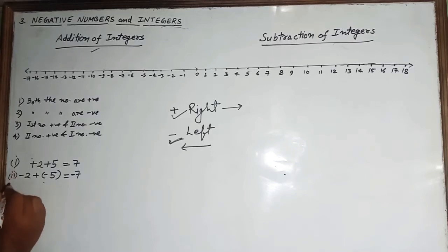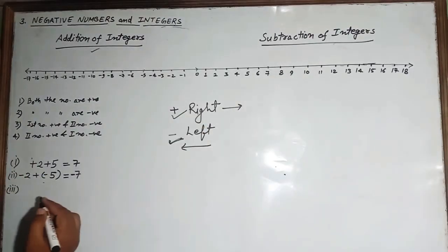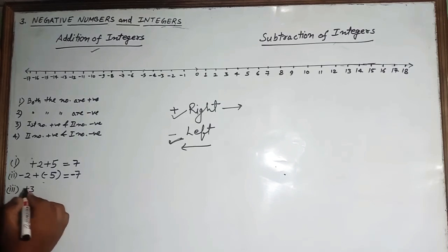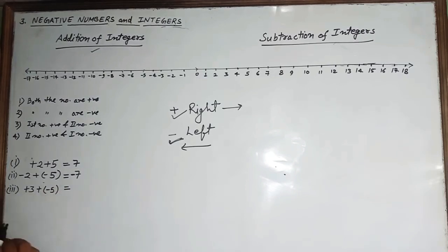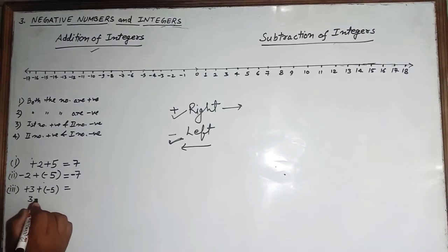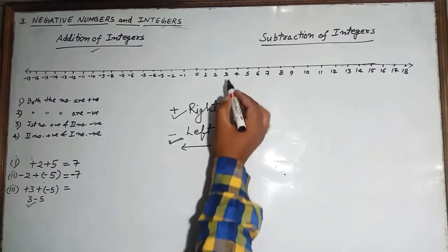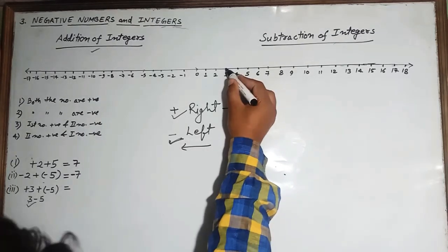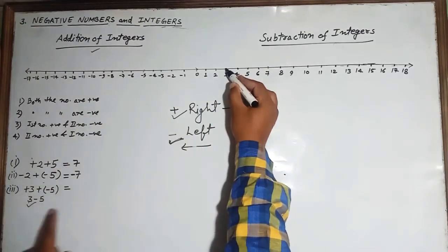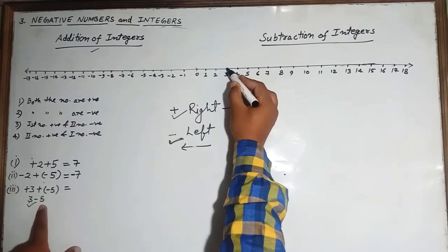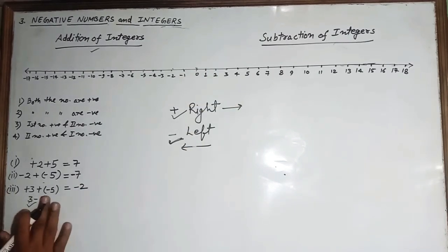The third case is when the first number is positive and the second number is negative, for example 3 plus minus 5. Plus into minus gives minus, so we write this as 3 minus 5. On the number line, 3 is here, and we move 5 steps to the left — 1, 2, 3, 4, 5 — so the answer is minus 2.